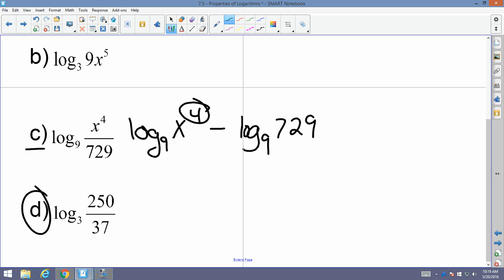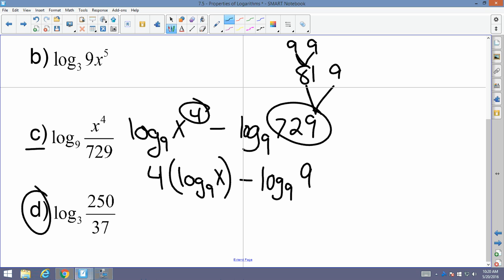I have an exponent here, I need to expand. So where does that exponent go when I expand? To the front, because multiplied. Exponents go to multiplication. So 4 log base 9 of x minus 729. This breaks up into 81 times 9, and that's 9 times 9. So this breaks up into the log base 9 of 9 cubed. Bless you. So that's going to equal 4 log base 9 of x minus, these cancel, 3.